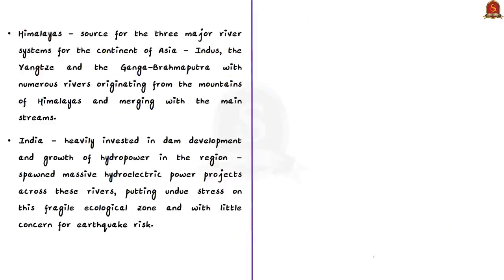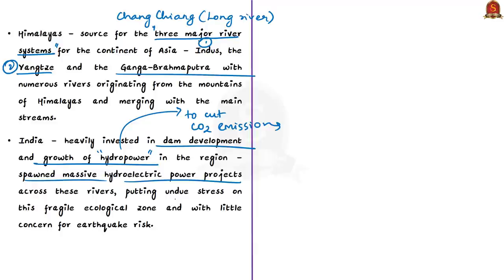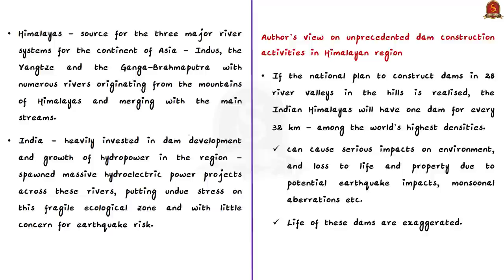The Himalayas are the source of three major river systems of the Asian continent — Indus, Yangtze (also called Changjiang, meaning Long River), and Ganga-Brahmaputra — along with numerous other rivers that originate from the mountains and merge with the main streams. Because of this, India heavily invested in dam development and hydropower in this region with the objective of cutting carbon emissions. This has led to massive hydroelectric power projects across these rivers, putting undue stress on the fragile ecological zone, with little concern for earthquake risk. Damming of rivers along with riverbed encroachment and mining activities are causing serious damages to this region.